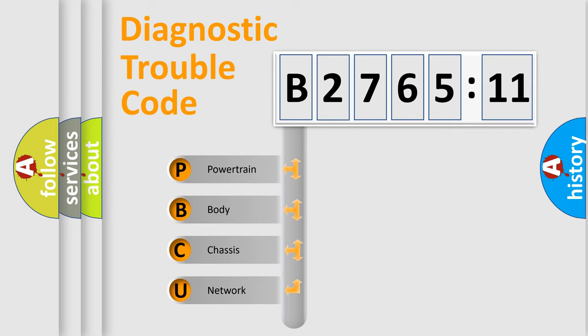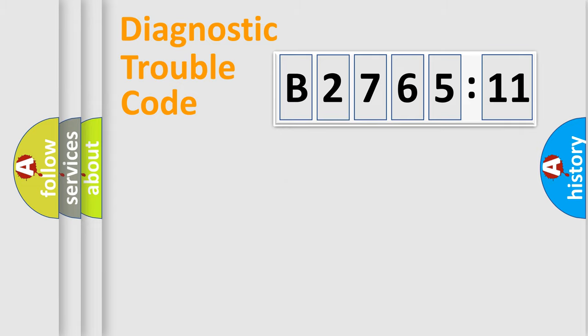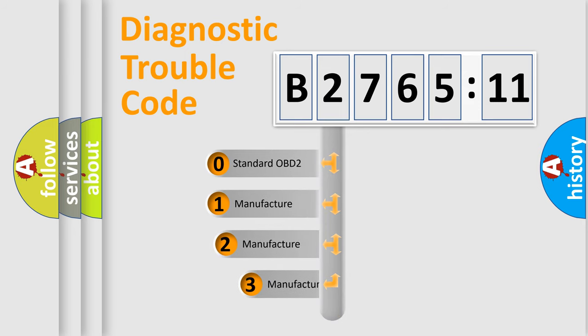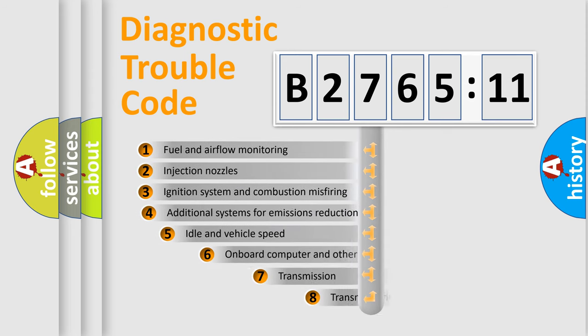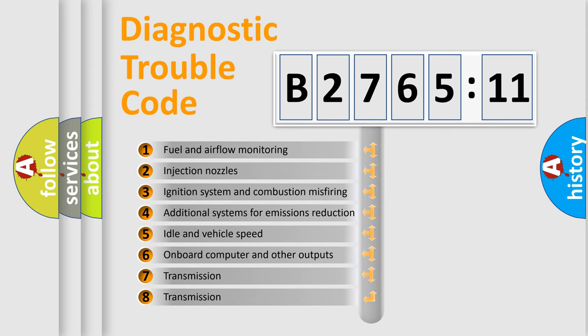This distribution is defined in the first character code. If the second character is expressed as zero, it is a standardized error. In the case of numbers 1, 2, or 3, it is a manufacturer-specific error. The third character specifies a subset of errors. Only the last two characters define the specific fault of the group. The add-on to the error code serves to specify the status in more detail, for example, a short to ground.